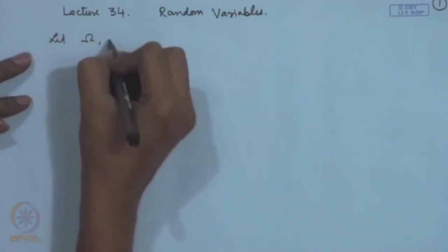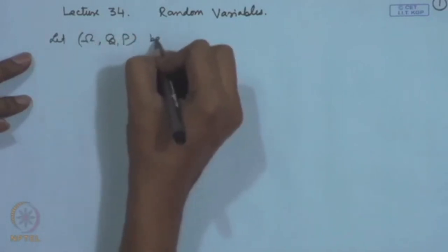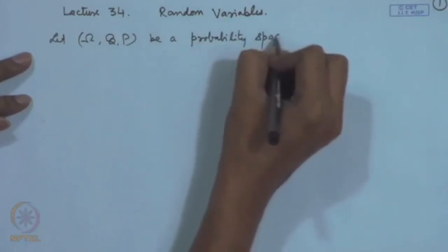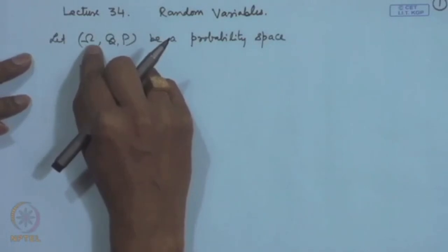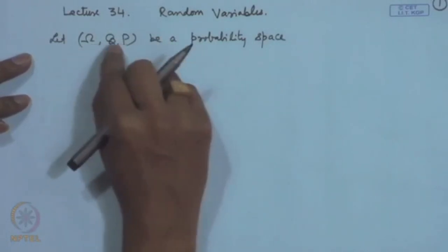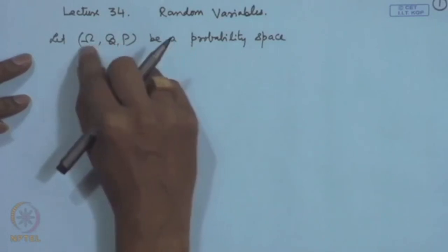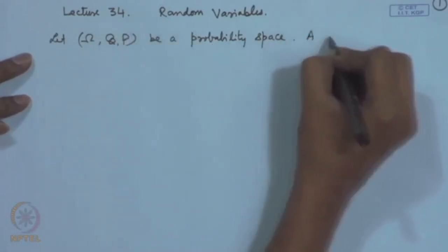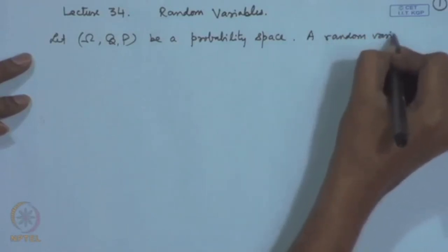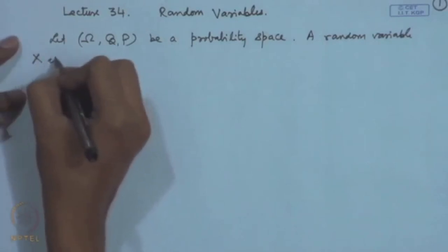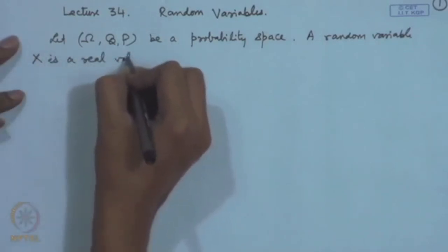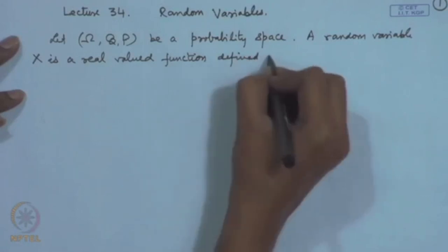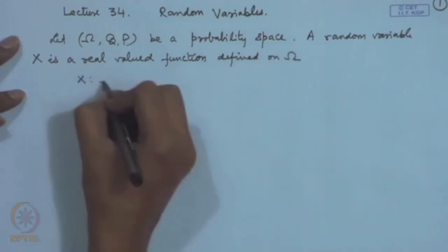We start with a probability space (Ω, B, P): a random experiment with sample space Ω, script B denoting a sigma-field of subsets of Ω, and P the probability function defined on that. A random variable X is a real-valued measurable function defined on Ω — that is, X is a function from Ω into ℝ.